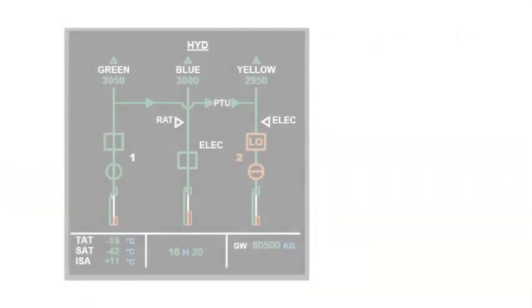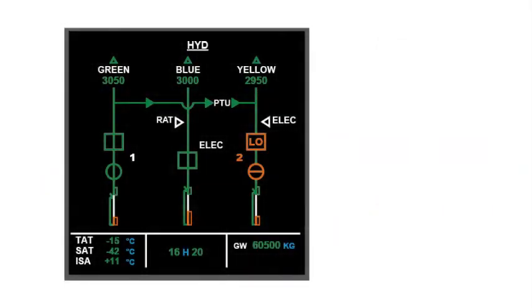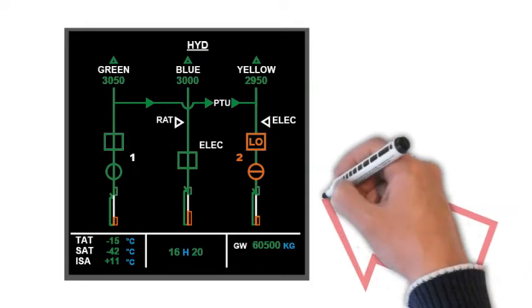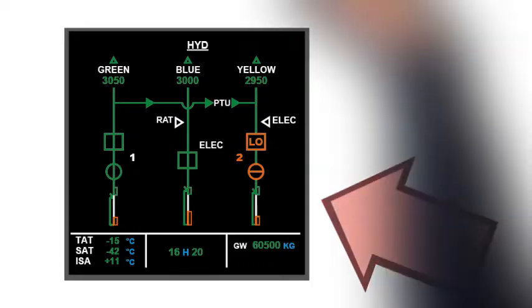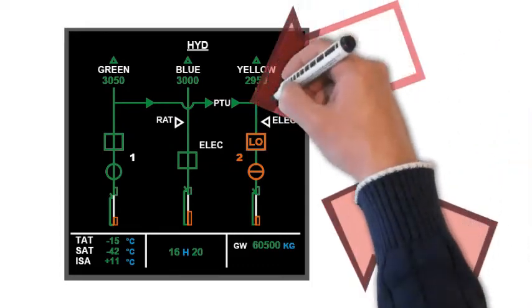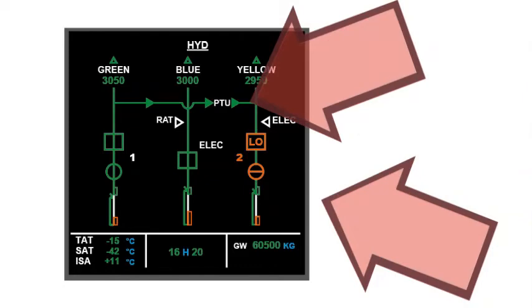The affected yellow or green engine hydraulic pump is lost, but the system is powered by power transfer unit (PTU) if available. PM asks PF to clear the ELEC page and move forward to status page.